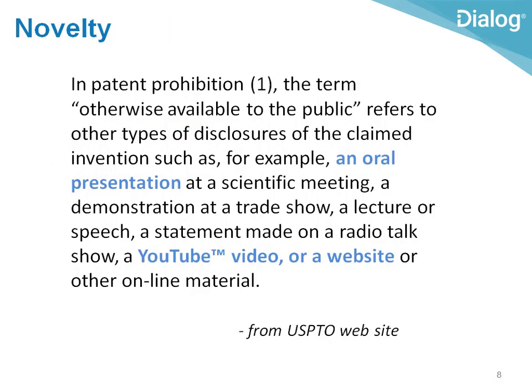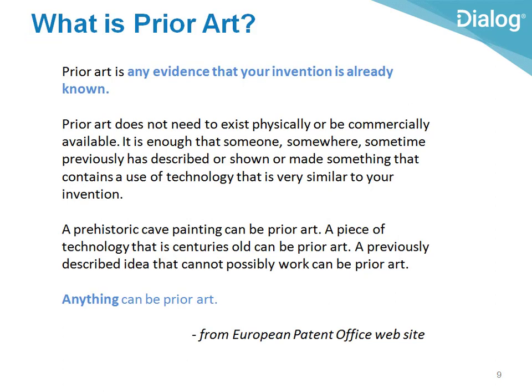So the test in plain words is whether the idea is already out there. The PTO says examples could include presentations at meetings, trade shows, lectures, YouTube videos, and websites. The European Patent Office says that prior art could include a prehistoric cave painting, or something that doesn't even physically exist yet, as long as it has been described — they even use the words 'anything can be prior art.' So when you're searching for whether something can be patented, you want to cast your net wide, searching both broad and deep. We have all kinds of databases you can use for that, but today we're going to concentrate on searching for patents.